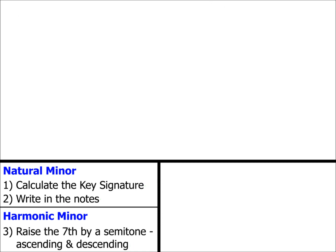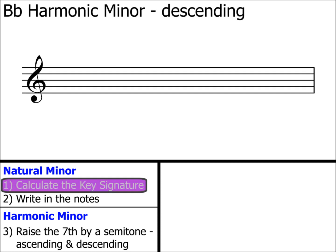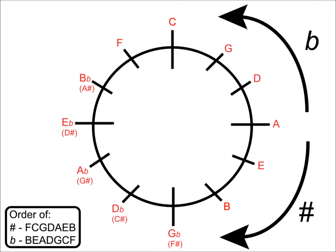Just one final example: B flat harmonic minor descending. Step one: calculate the key signature. Let's have a look at our circle of fifths. Here's the B flat in the top left of the clock. We count around starting from the A — one, two, three, four, five. B flat is five steps away from A on the flat side of the clock. Therefore, B flat minor has five flats in its key signature.